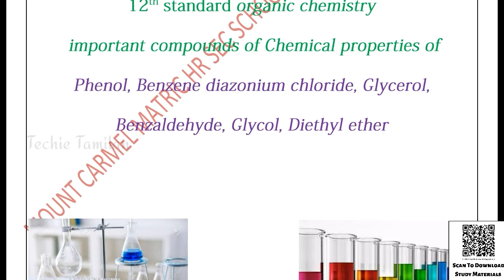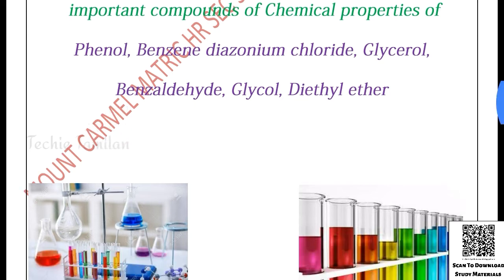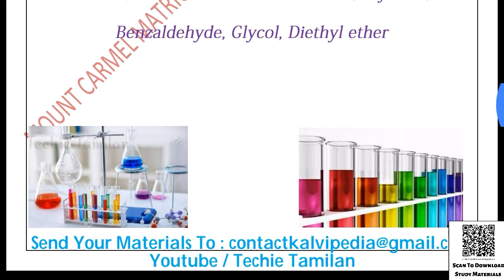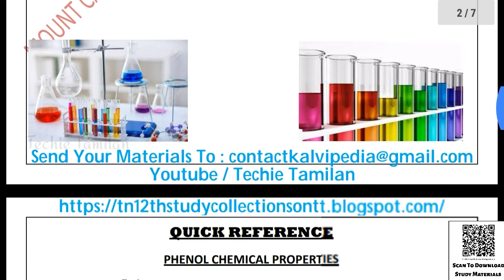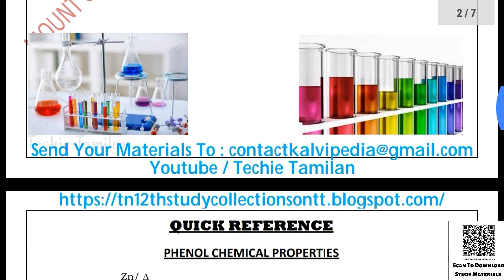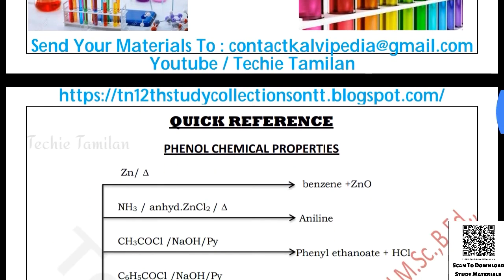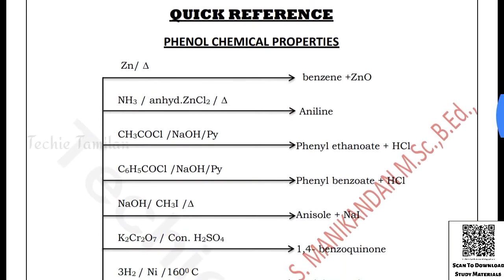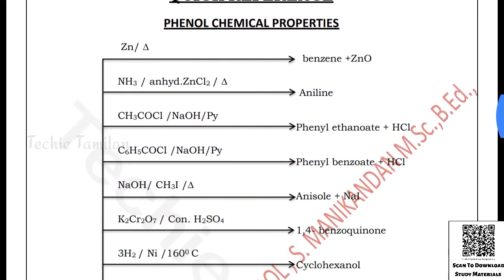Phenol, benzene, diosinam chloride, glycerol, pensaldecade, glycerol, glycol — glycol and all the chemical properties and compounds. So if you have the chemical properties, you will see the chemical properties.